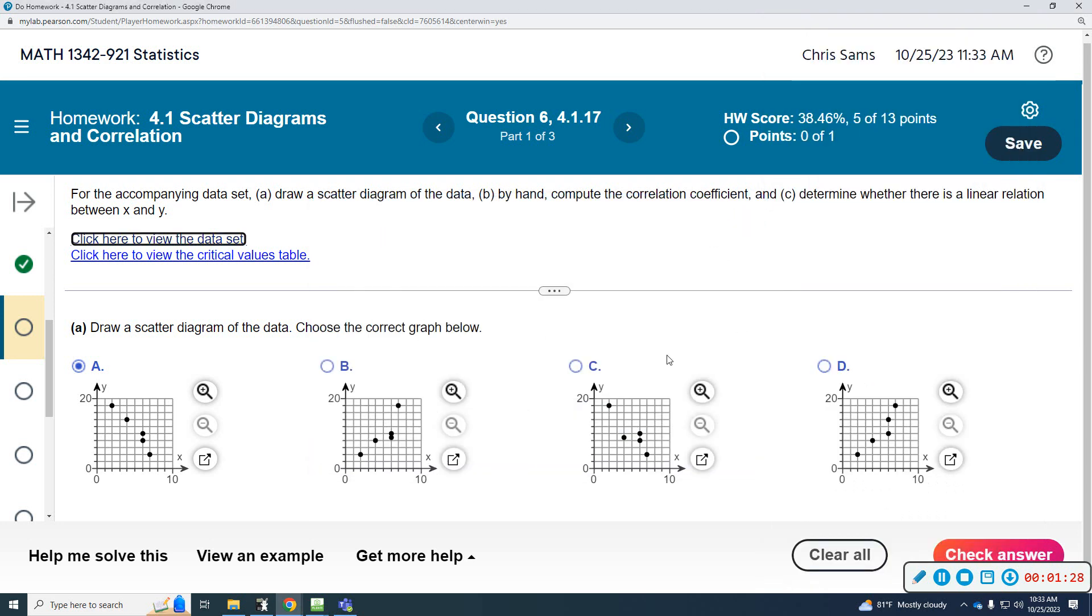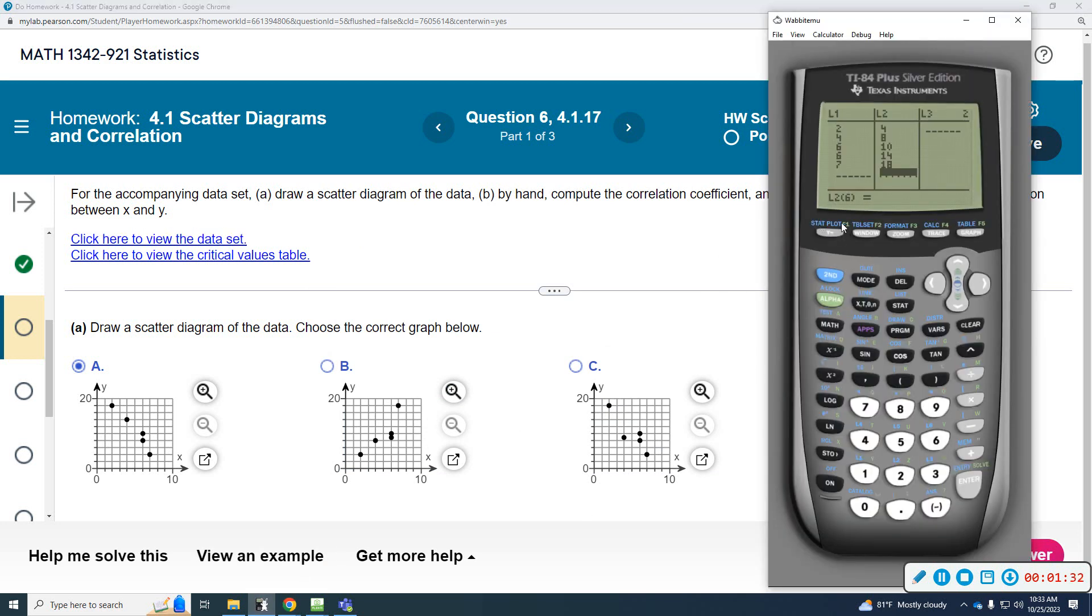Okay, once we get that, I'm going to go to stat plot. So I'm going to do second Y equals, hit enter to turn it on. The first one that is highlighted is a scatter plot. It's on already. Hit down. It's already on scatter plot, so I'm going to hit graph. And then you can see some dots, but if I do zoom, not zoom 6, not zoom 0. I want to do zoom stat. Where's stat at? Option number 9. I'm going to do zoom stat. It's going to give me a stat plot diagram.